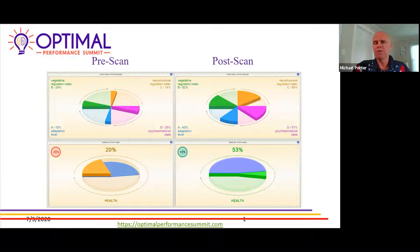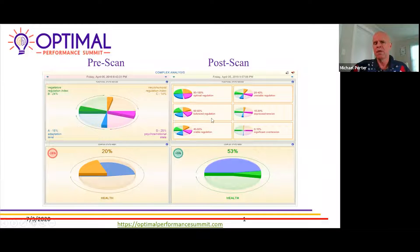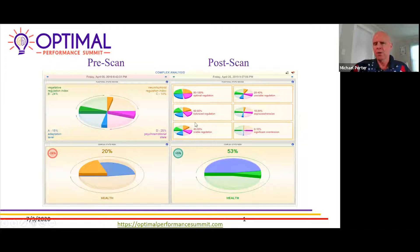This is a good gauge. The average person that we see comes in in this 20 to 40 percent range in this unstable regulation. Our goal then is to move them up to this stable and then up into this balance.